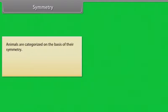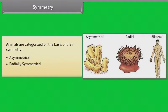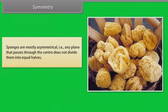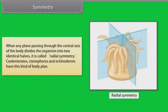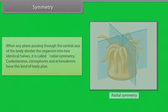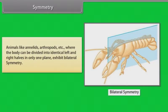Animals are categorized on the basis of their symmetry: asymmetrical, radially symmetrical, and bilaterally symmetrical. Sponges are mostly asymmetrical — any plane passing through the center does not divide them into equal halves. When any plane through the central axis divides the organism into two identical halves, it is called radial symmetry, seen in coelenterates, ctenophores and echinoderms. Animals like annelids and arthropods, where the body can be divided into identical left and right halves in only one plane, exhibit bilateral symmetry.